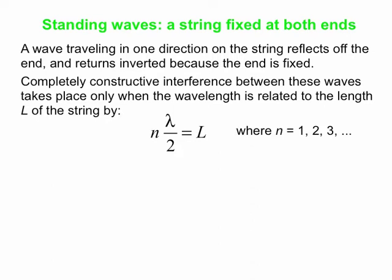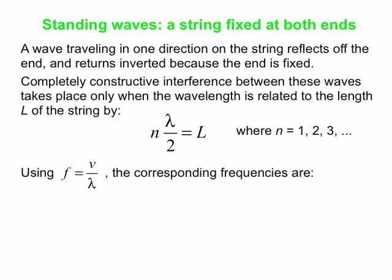There's an integer number of half-wavelengths, where n is 1, 2, 3, et cetera. And if we know that f = v/λ, and we rearrange that previous equation for λ — so λ = 2L/n — we plug that into our equation, and we get the special frequencies, what we call the standing wave frequencies, also known as harmonics: integer multiples of v/2L.